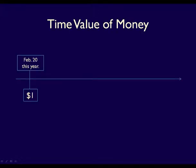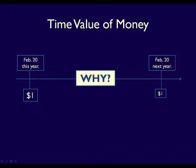The time value of money says that $1 in your hand today, say on February 20th, is worth more than $1 in your hand on February 20th next year, 365 days from now. The question is, why is that true?